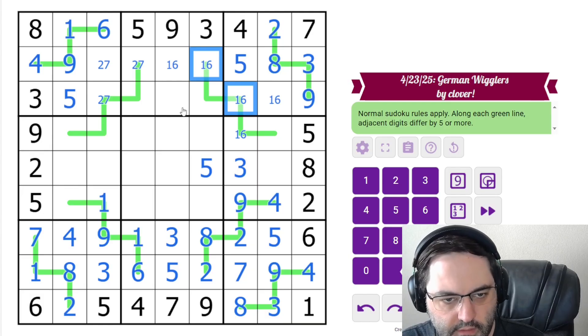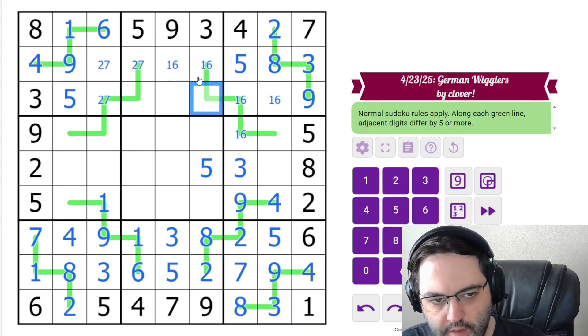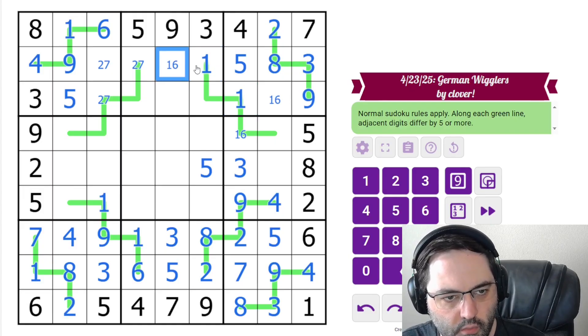Ah, these cannot be 6 now because this can't be 1. We have a 1, 6 pair here. So these must be the 1s.